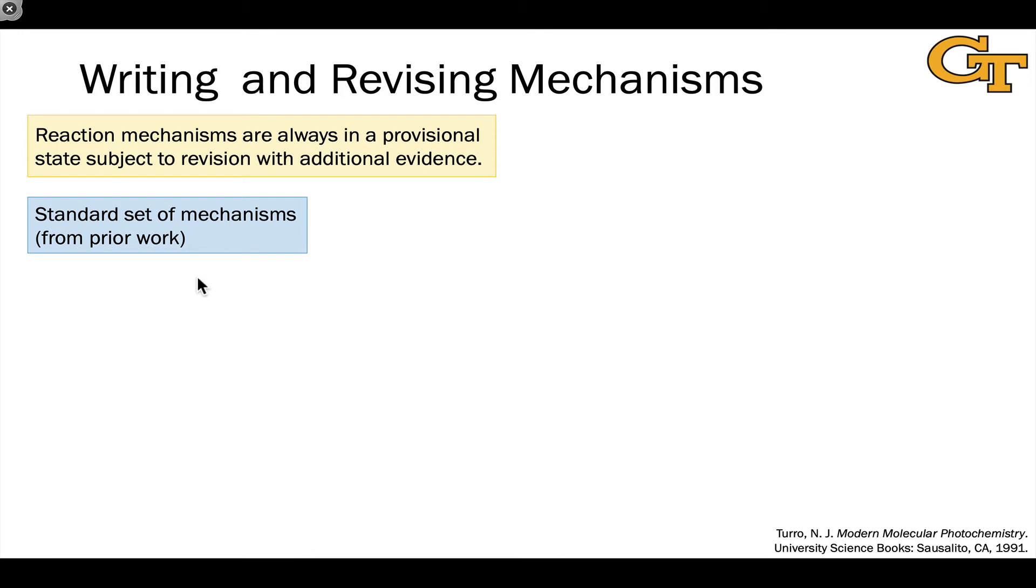We start with a standard set of mechanisms from prior work. For example, the set of primary photo reactions that we looked at in this series of videos. We then use a process of elimination using either theoretical considerations of the molecules in question that would react or experimental data to eliminate many of the steps from our standard set that cannot possibly occur